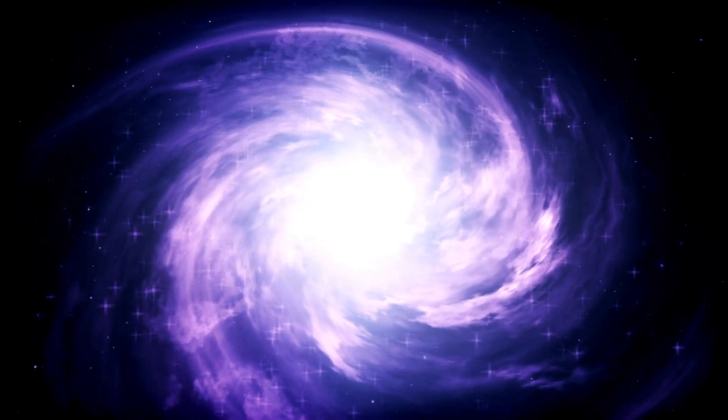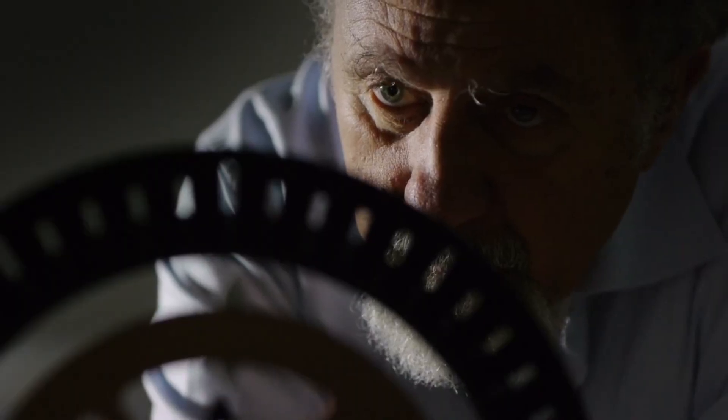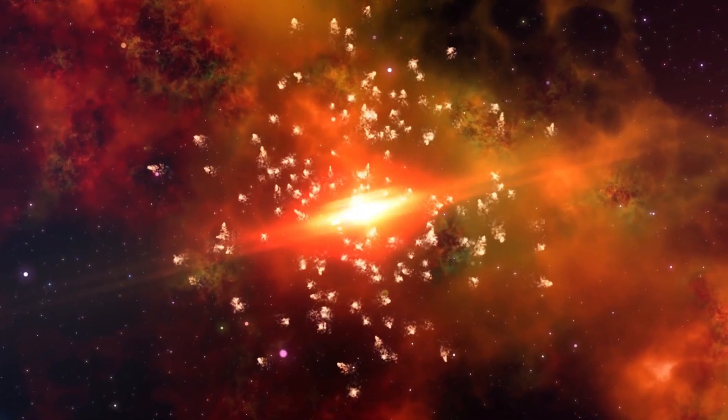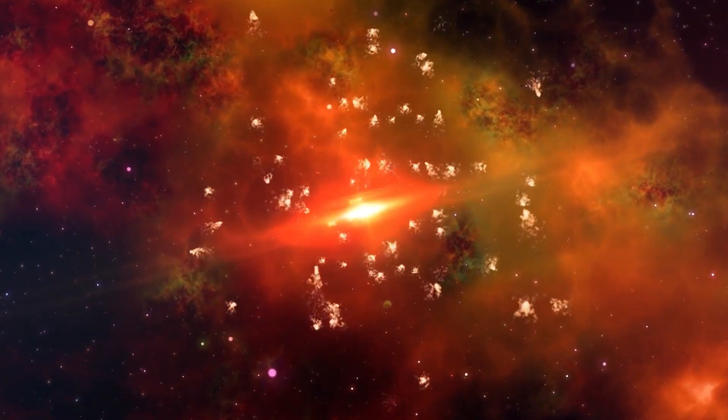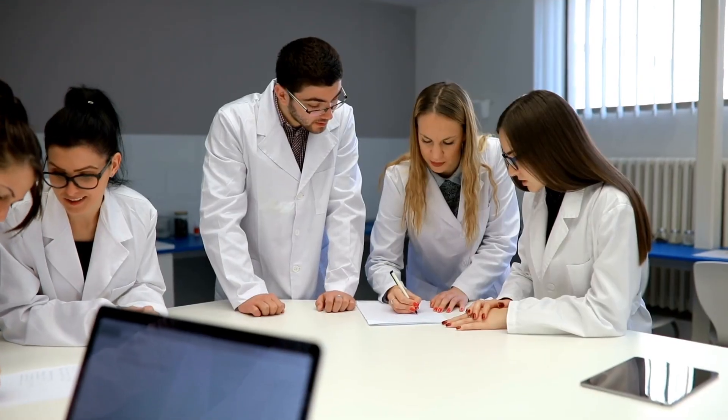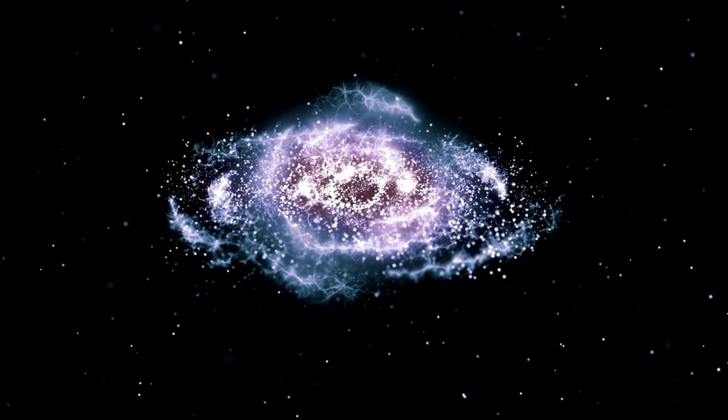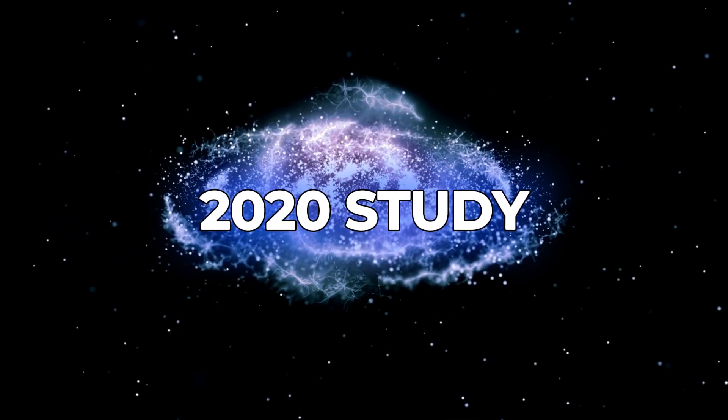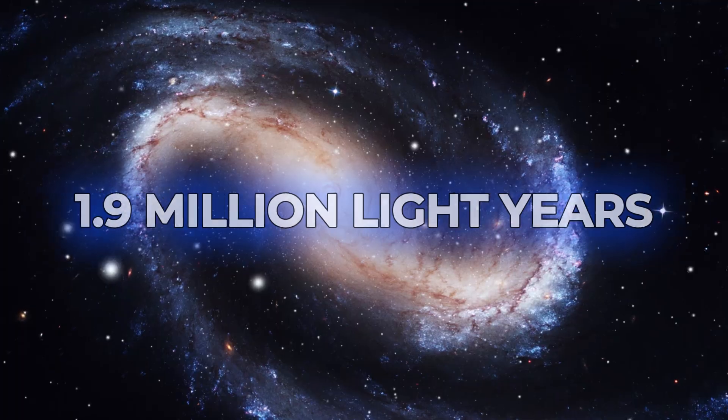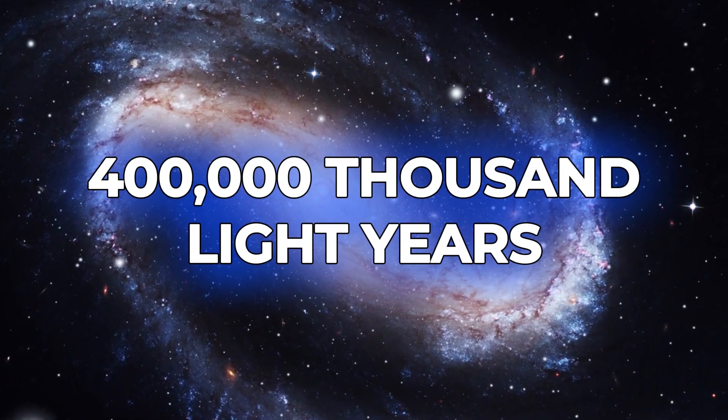Before determining the Milky Way's size, scientists needed to define its edge. Much like how our atmosphere gradually fades into space, the Milky Way fades into intergalactic space without a clear boundary. Scientists had to select a specific point to mark the edge. For example, a 2020 study estimated the Milky Way's boundary based on its gravitational pull on nearby galaxies, concluding a diameter of 1.9 million light-years, with a margin of error of 400,000 light-years.